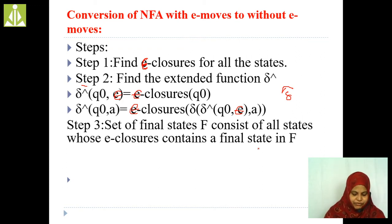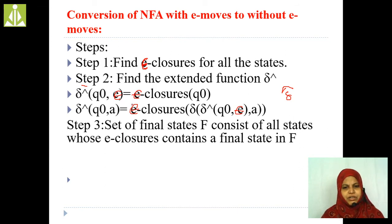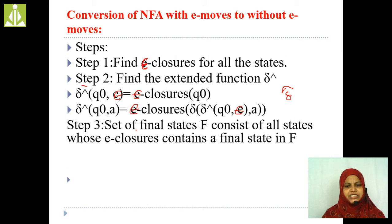The formula for the extended transition function is: delta cap of Q0 comma epsilon equals epsilon closure of Q0. And delta cap of Q0 comma A equals epsilon closure of delta of delta cap of Q0 comma epsilon comma A. This second step is very very important. The final states consist of all final states present in the NFA with epsilon moves.